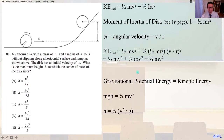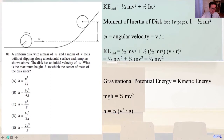And now we know that the gravitational potential energy equals the kinetic energy. So we have mgh equals 3/4 mv squared. Doing some algebra, we see that h equals 3/4 v squared over g. And that is answer B.